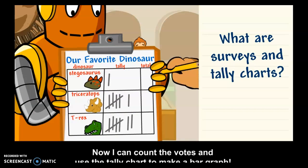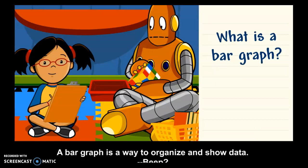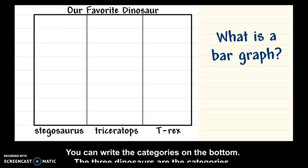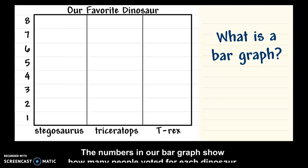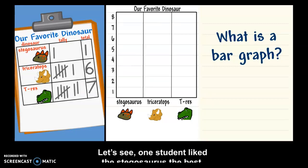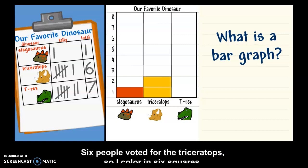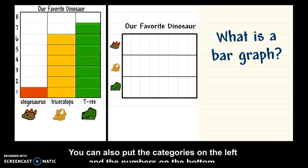Now I can count the votes and use the tally chart to make a bar graph. A bar graph is a way to organize and show data. You can write the categories on the bottom — the three dinosaurs are the categories. Then you can write the numbers on the side. The numbers in our bar graph show how many people voted for each dinosaur. One student liked the stegosaurus, so I fill in one square. Six people voted for the triceratops, so I color in six squares. Seven people said the t-rex was their favorite. You can also put the categories on the left and the numbers on the bottom.